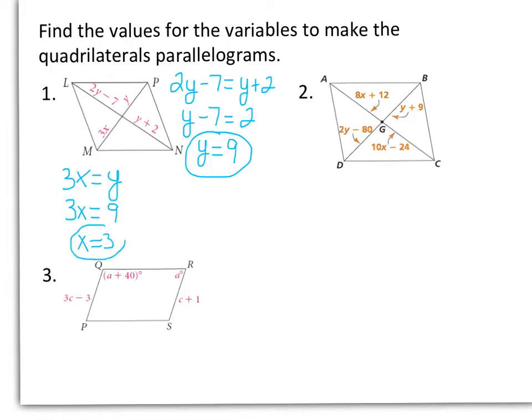So if x is 3 and y is 9, our quadrilateral is a parallelogram. For number 2, if quadrilateral ABCD is a parallelogram, then our diagonals would bisect each other.